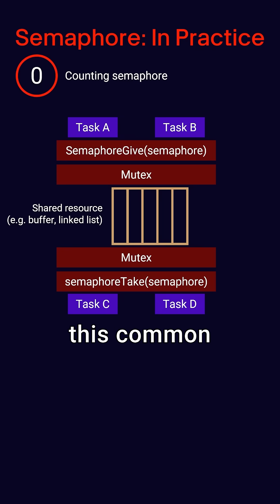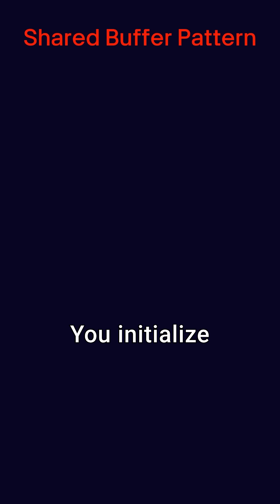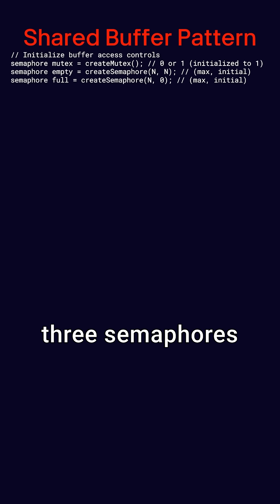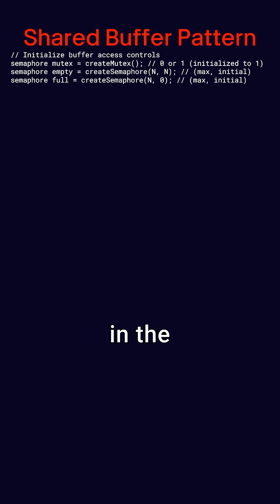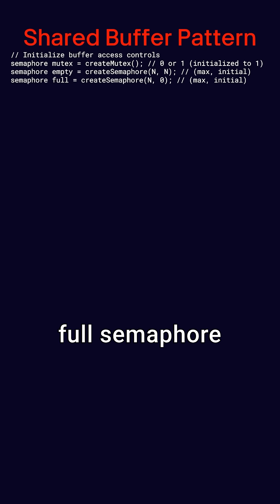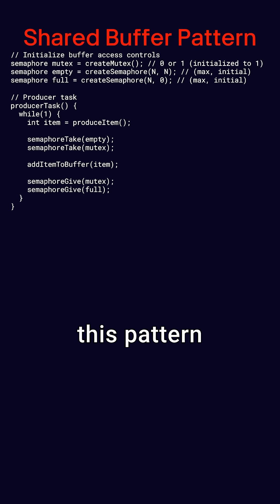That gives rise to this common shared buffer pattern. You initialize three semaphores: a mutex with value one, the empty semaphore with the number of slots in the buffer, and the full semaphore that tracks items in the buffer.